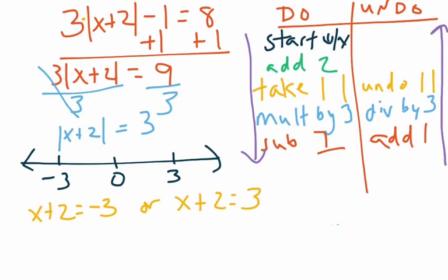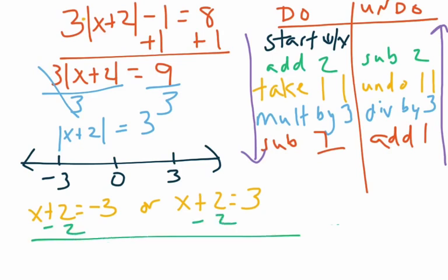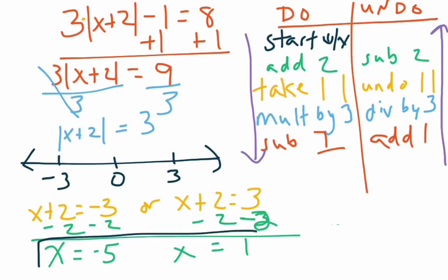That's how you undo the absolute value — that's the new step that most of you have never seen before. Moving up to undo adding two, we subtract two from both sides in both equations. In the first equation: negative three minus two is negative five, leaving x equals negative five. In the second equation: three minus two is one, leaving x equals one. So the two answers are x equals negative five and x equals one.